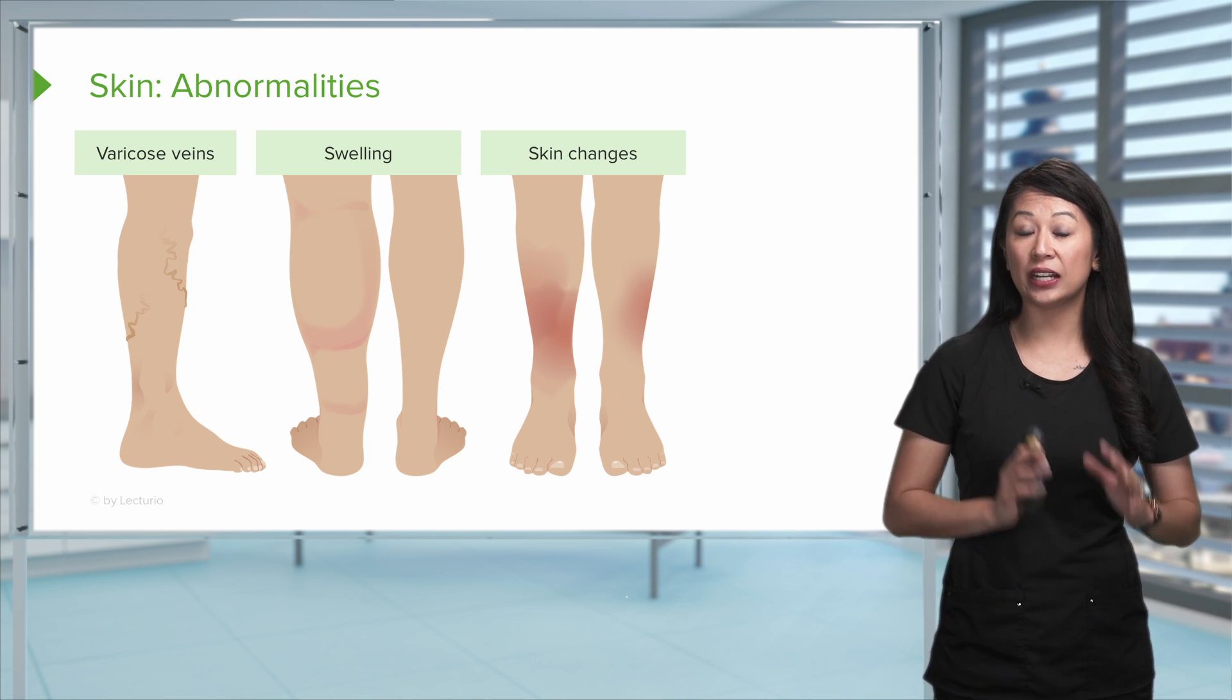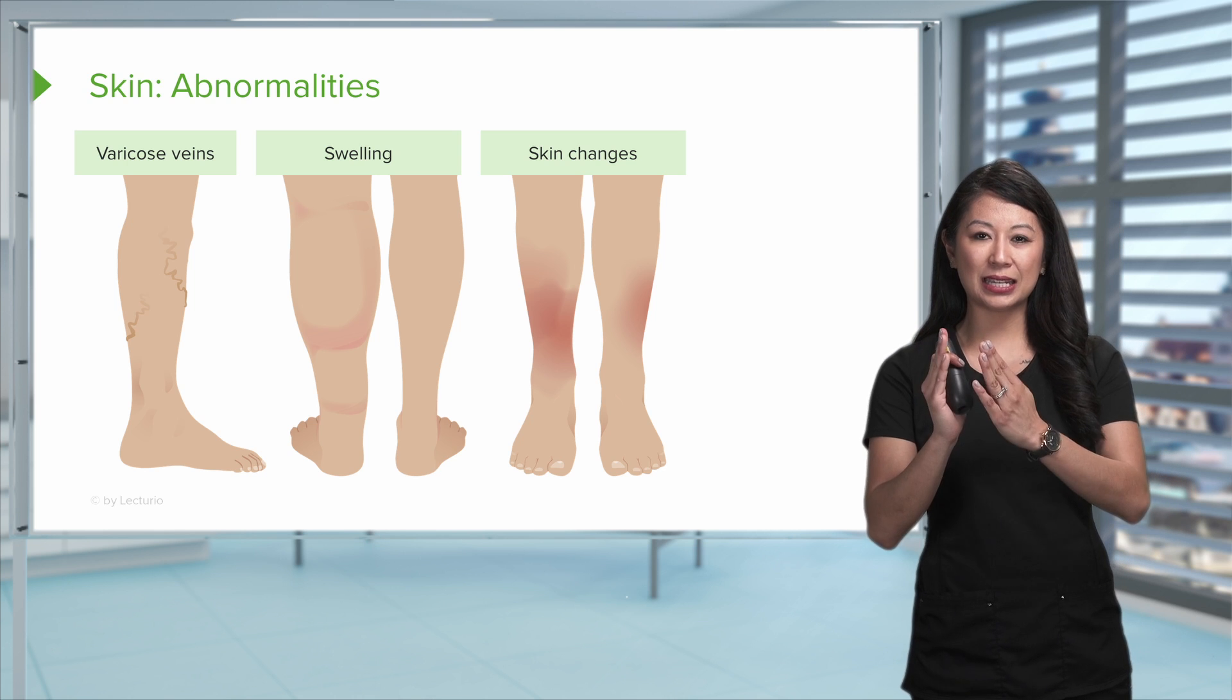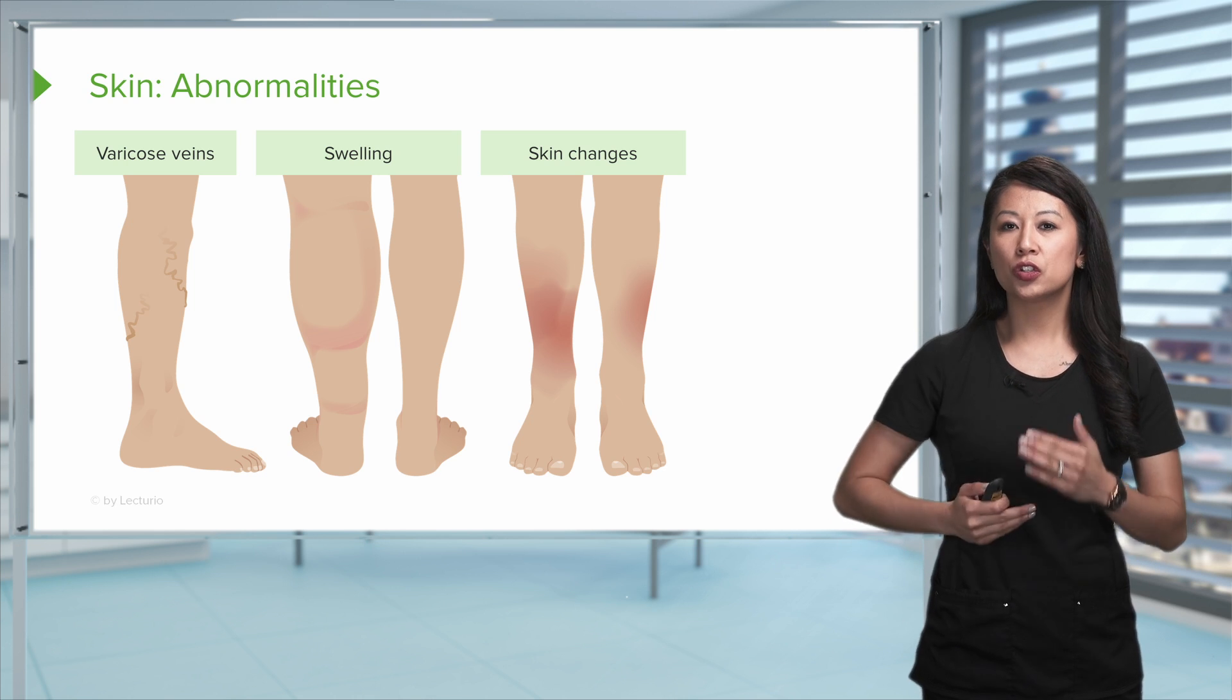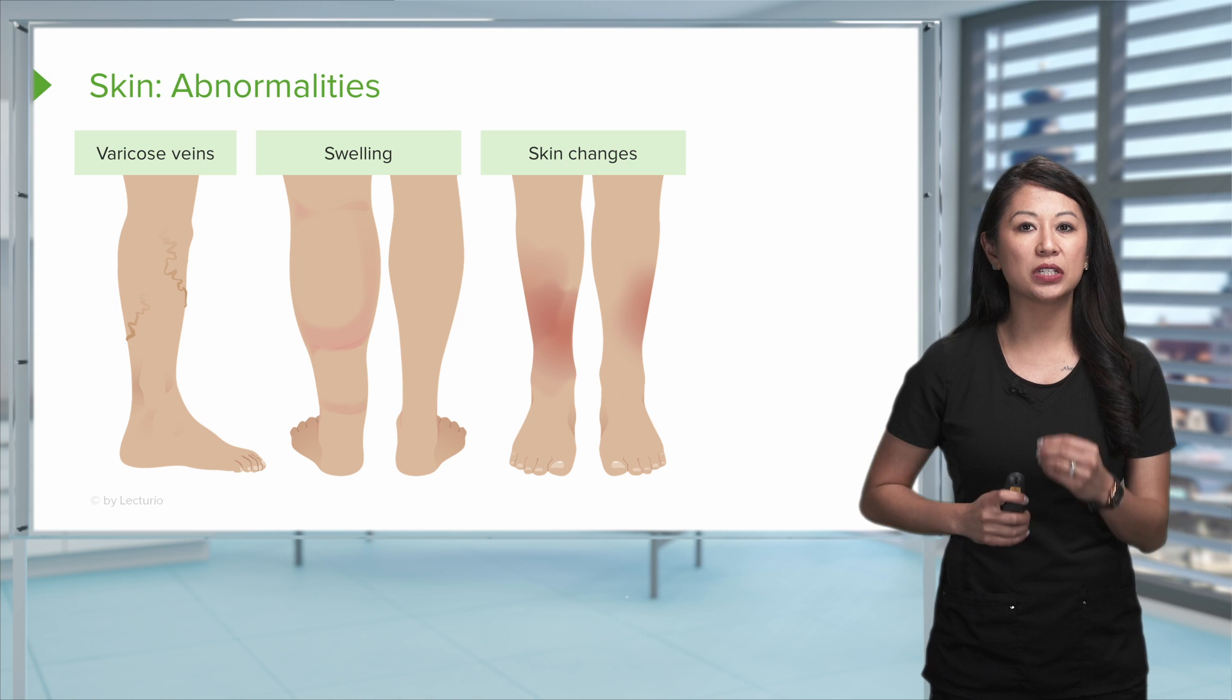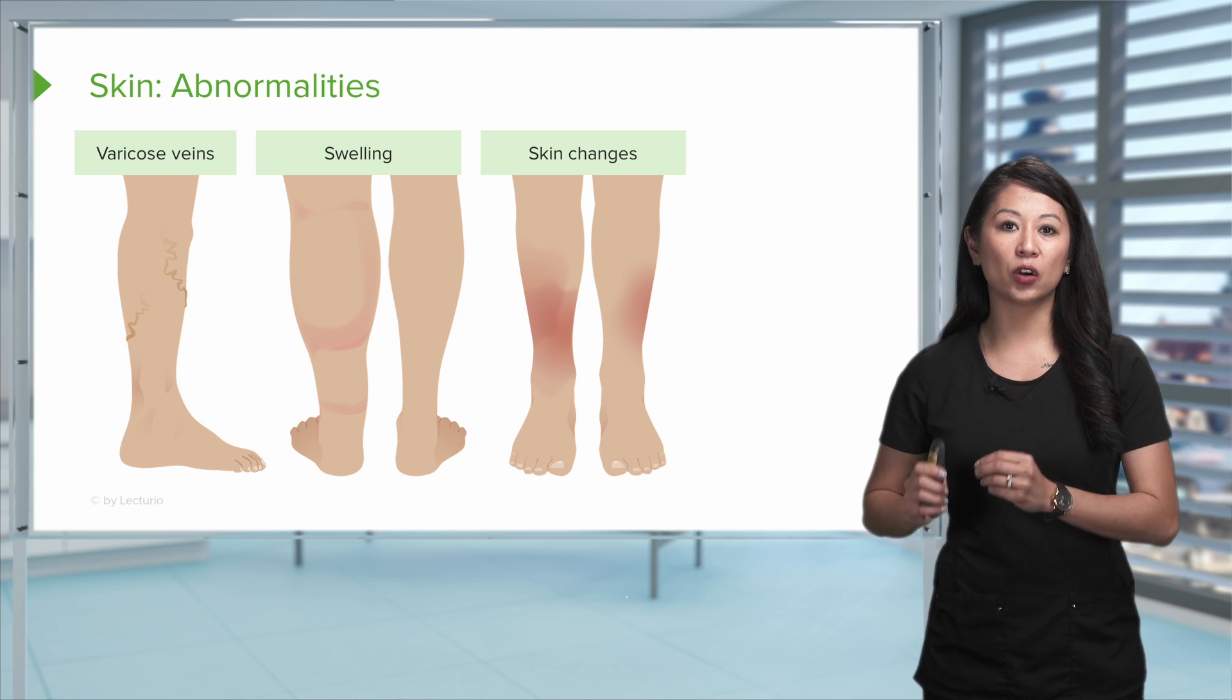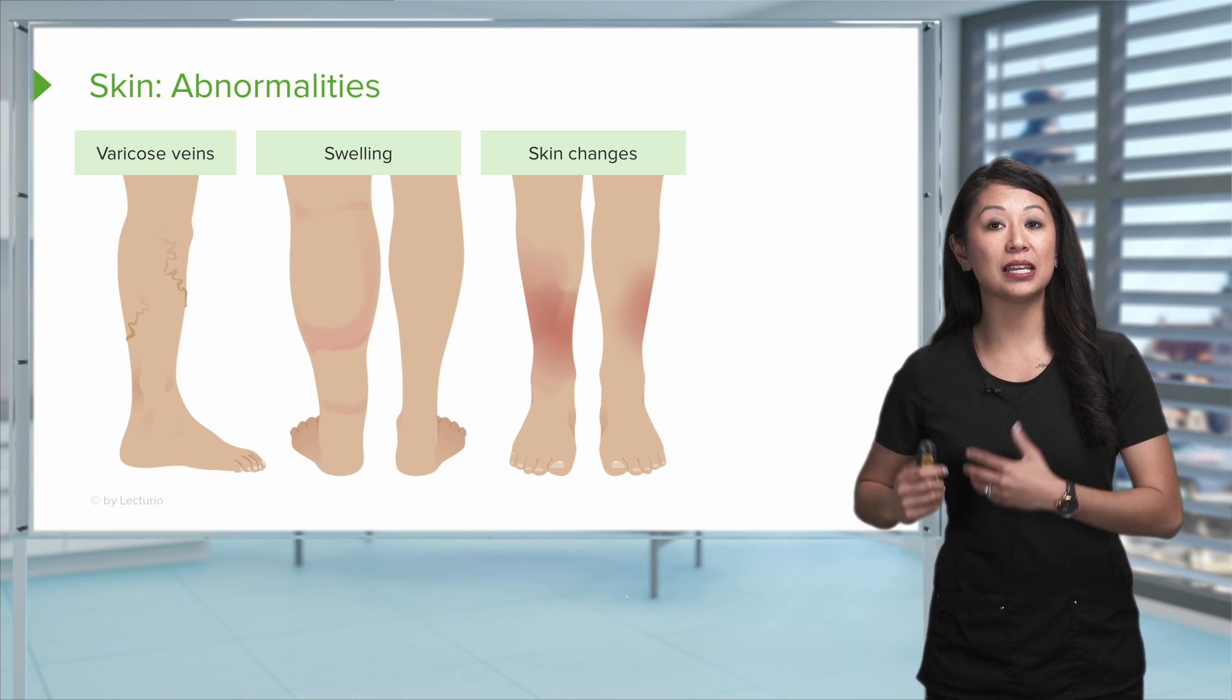Some patients with arterial disease, you'll kind of see the legs get dark purplish, shiny, kind of tough. That is a good indicator on assessment that this is arterial disease in your patient.